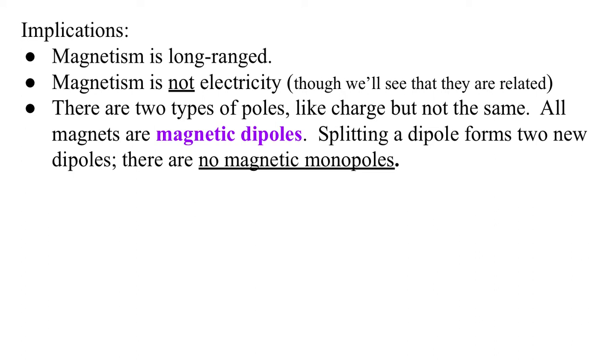And two, there are two types of poles, just like there are two types of charge, but it's not the same thing. All magnets that we encounter are magnetic dipoles. There's always a north and a south. Splitting a dipole forms new dipoles. There are no magnetic monopoles. In our universe, we have never encountered them and we have good reason to think that they don't exist.